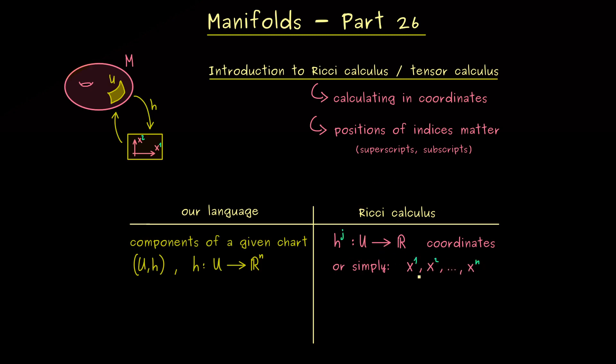In the Ricci calculus this makes sense because we don't need a special name for the map here. The map can have the same name as the coordinates in R^n. So you just have to know that these denote maps or numbers depending on the context. However, this nicely fits when we go to the coordinate basis of the tangent space T_p M.